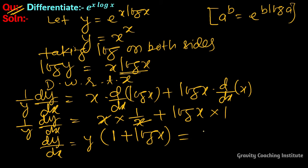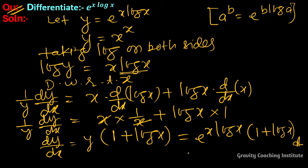Therefore dy upon dx equals e to the power x log x into bracket of 1 plus log x. This is the answer, or equivalently x to the power x times 1 plus log x.